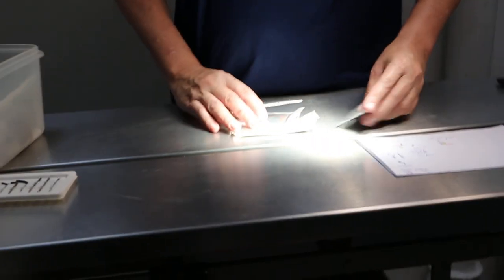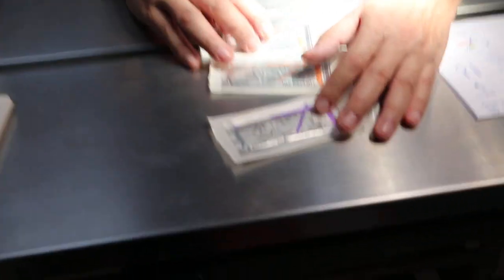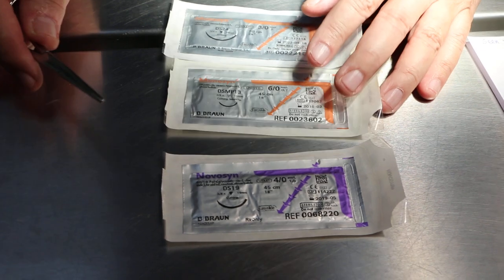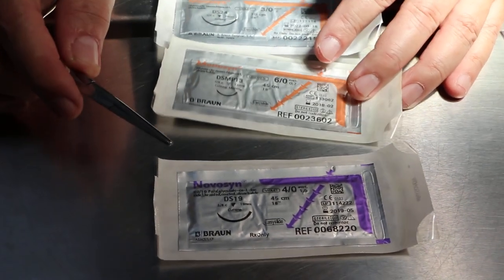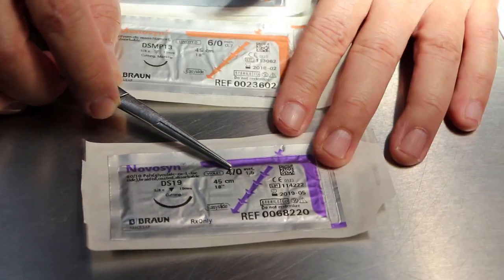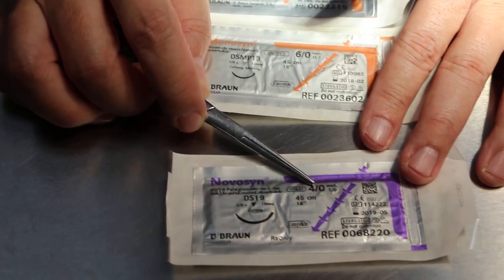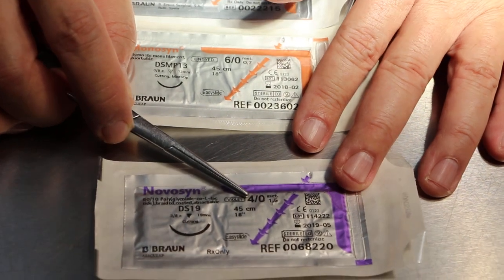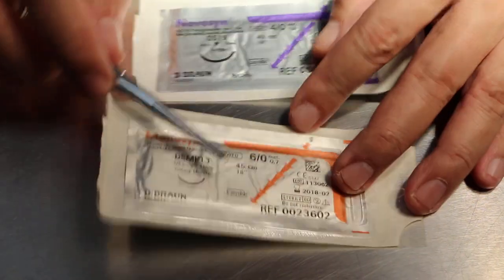Now, as far as suturing is concerned, in hamster the skin is very thin, unlike dogs and cats. So, I would normally prefer 5-0 or 4-0. 4-0 is the thinner one so that the hamster doesn't feel it and the skin is very thin. Sometimes I use 5-0. 6-0 is too small, too thin.